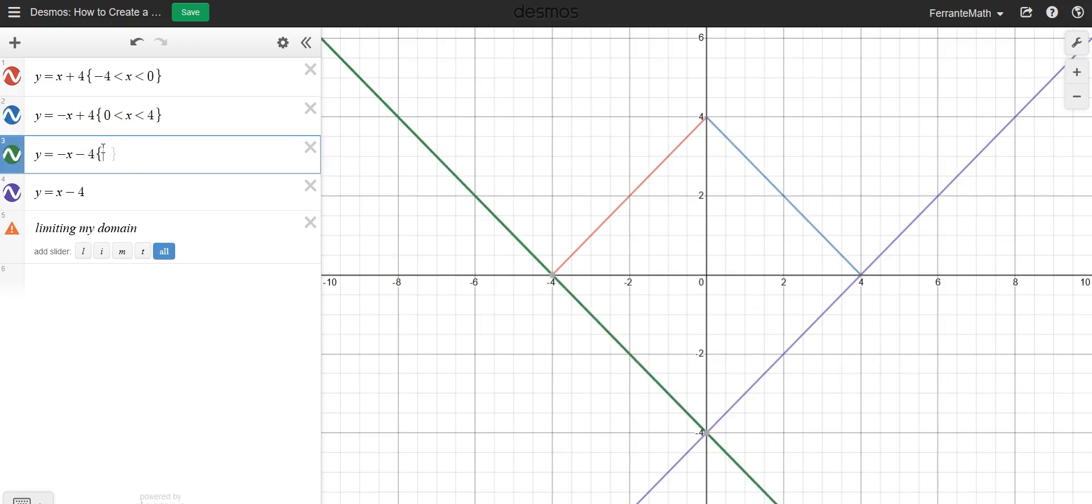Let's go to the next line, go ahead and do my brace. This is the green line, so here again I don't want any x greater than negative 4 or less than negative 4 or greater than 0. So I'm gonna do exactly the same domain I have up here, so negative 4 less than x less than 0. And there you go, there's my limited domain.